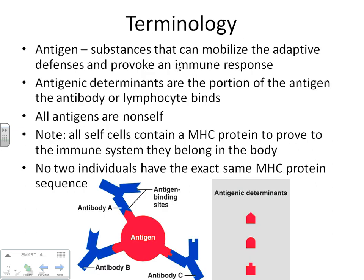Now let's look at the different parts of the adaptive immune system. An antigen is any little piece of the bacteria — the whole bacteria is the pathogen, but any little piece of it is the antigen. That's the part the T cell or B cell is going to react upon.